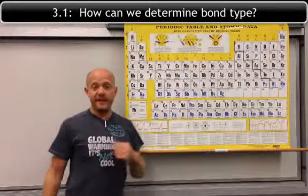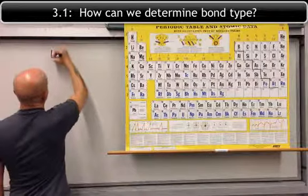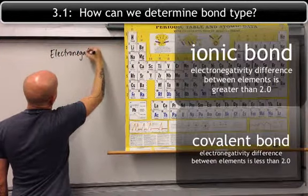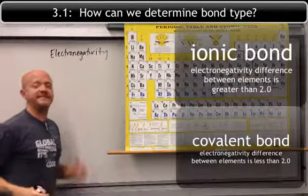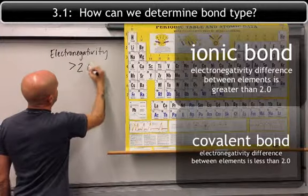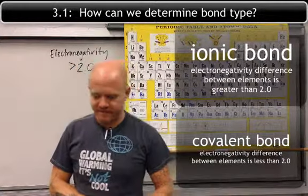So generally speaking, an ionic compound is something where the electronegativity difference is greater than 2.0. So you're going to look at the two different elements. For example,